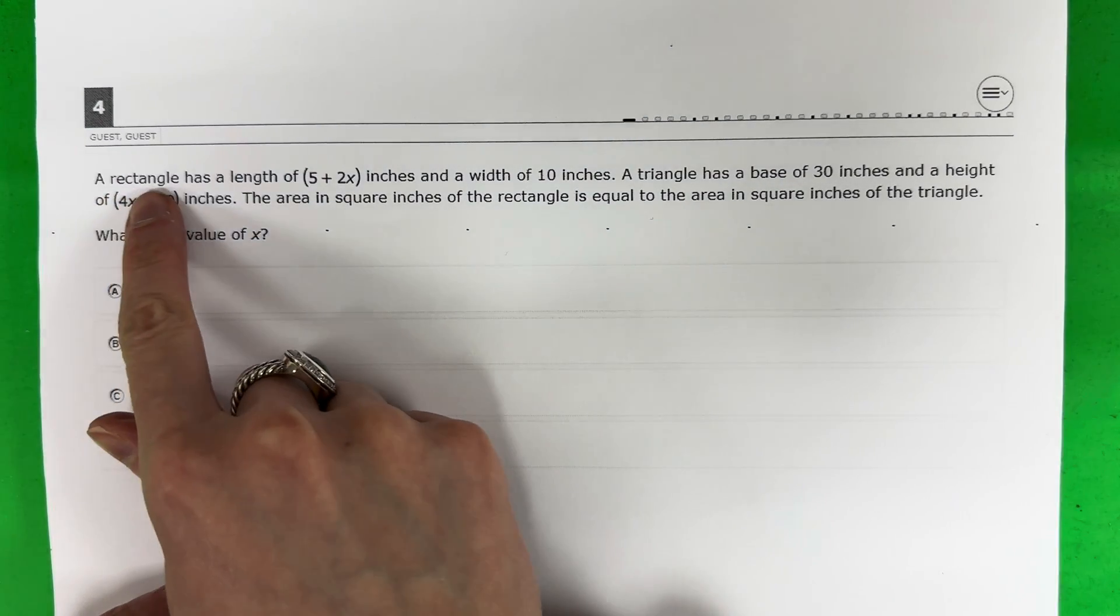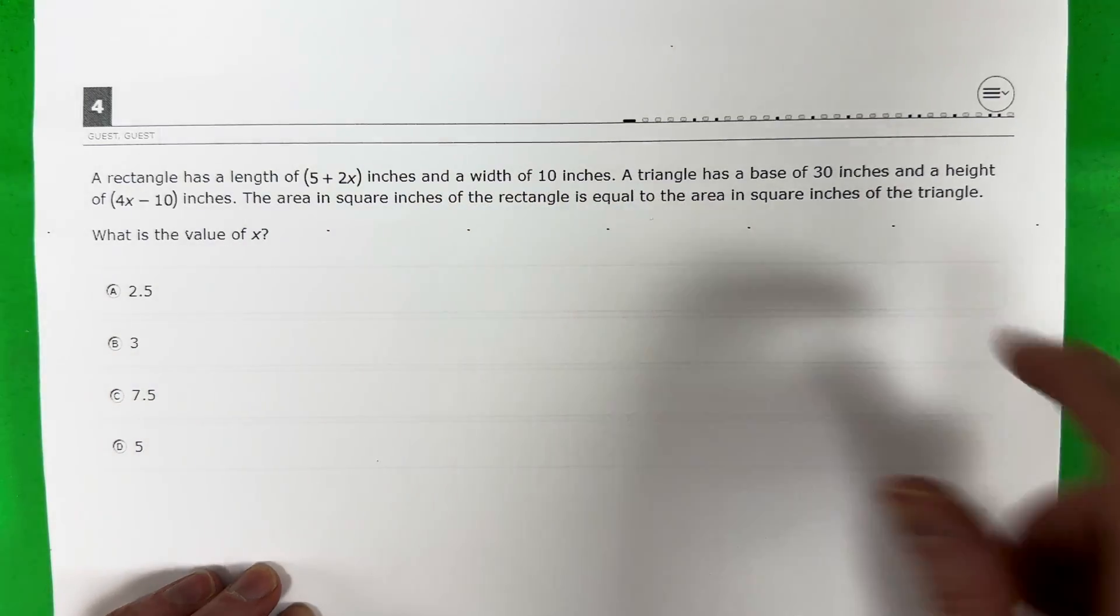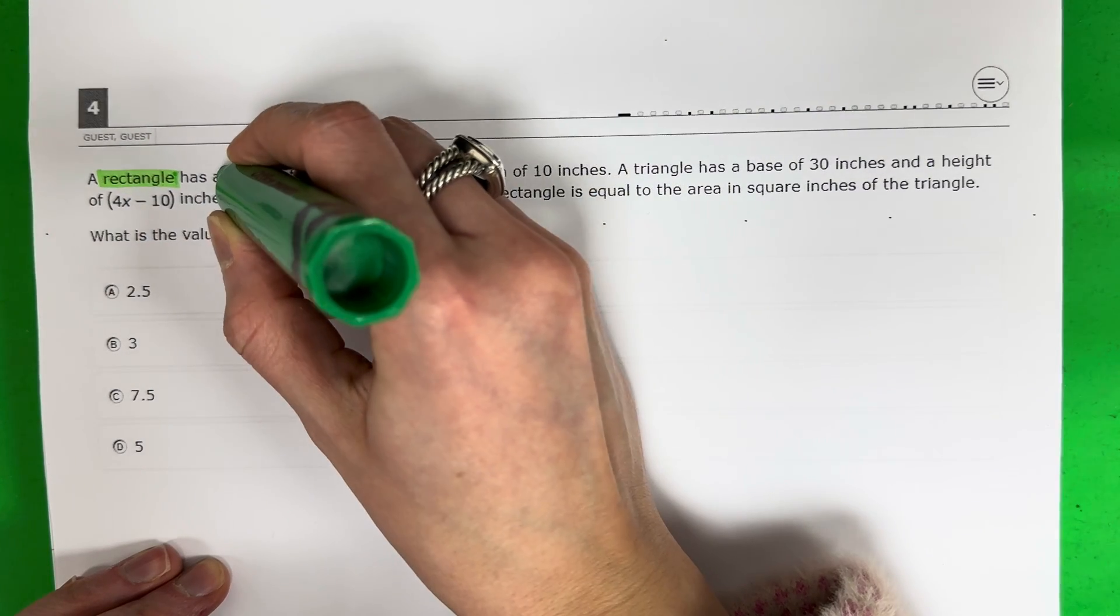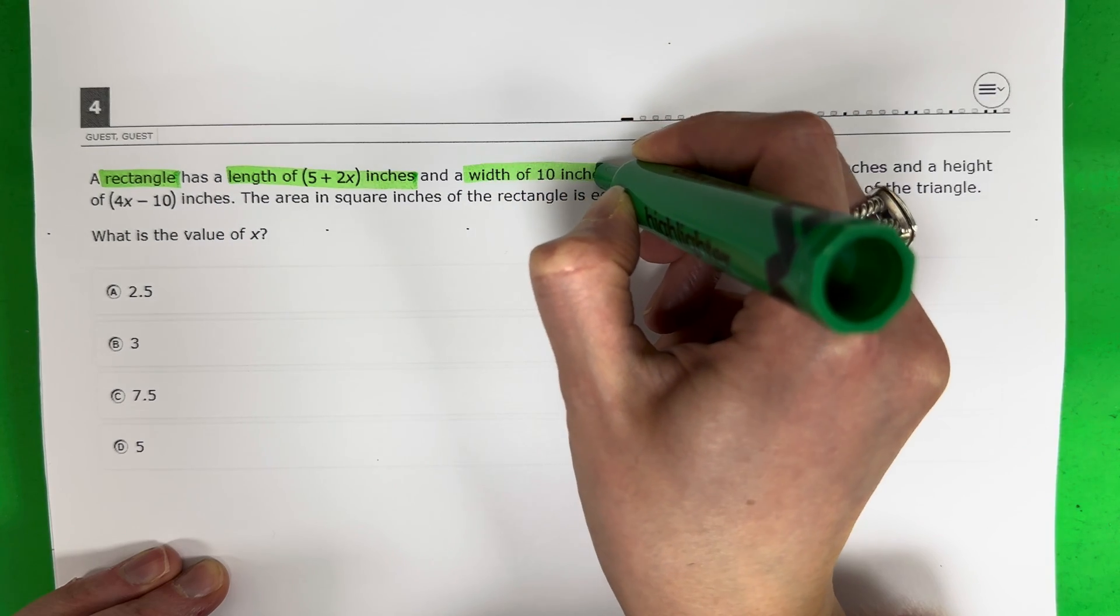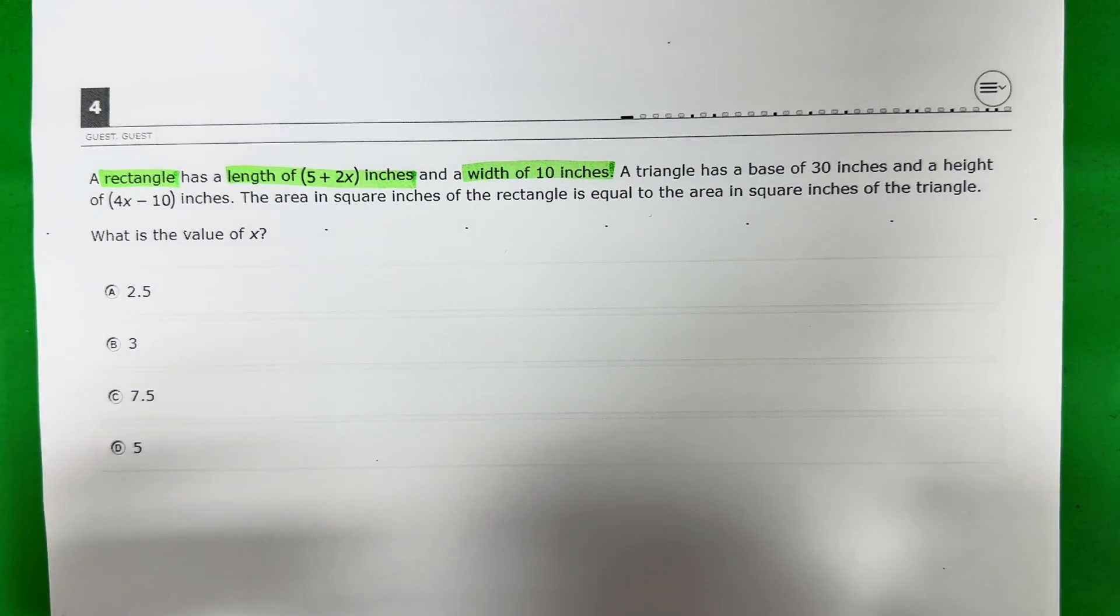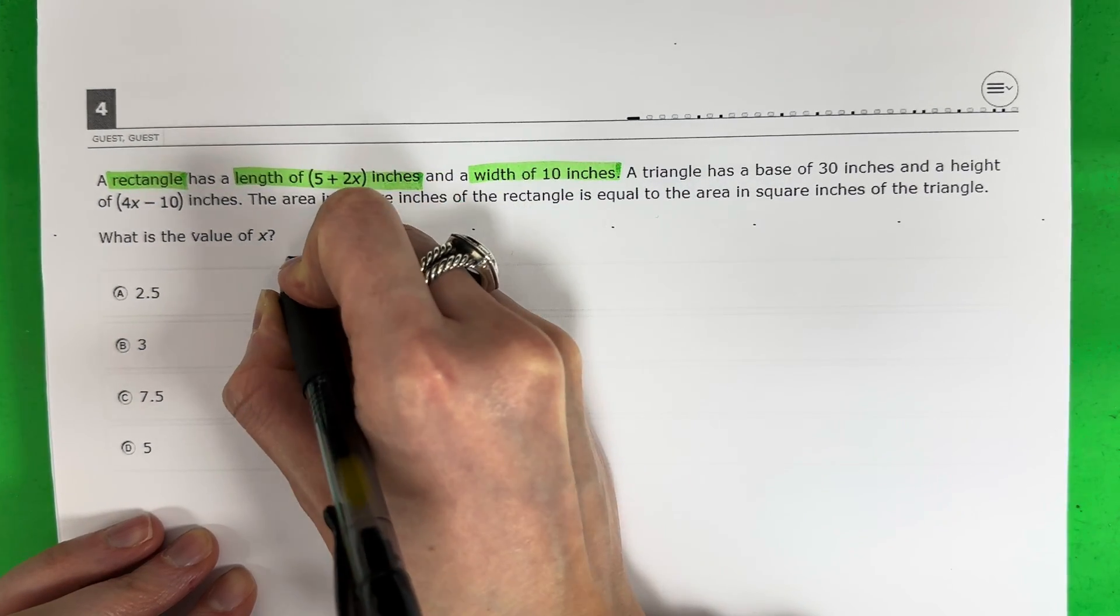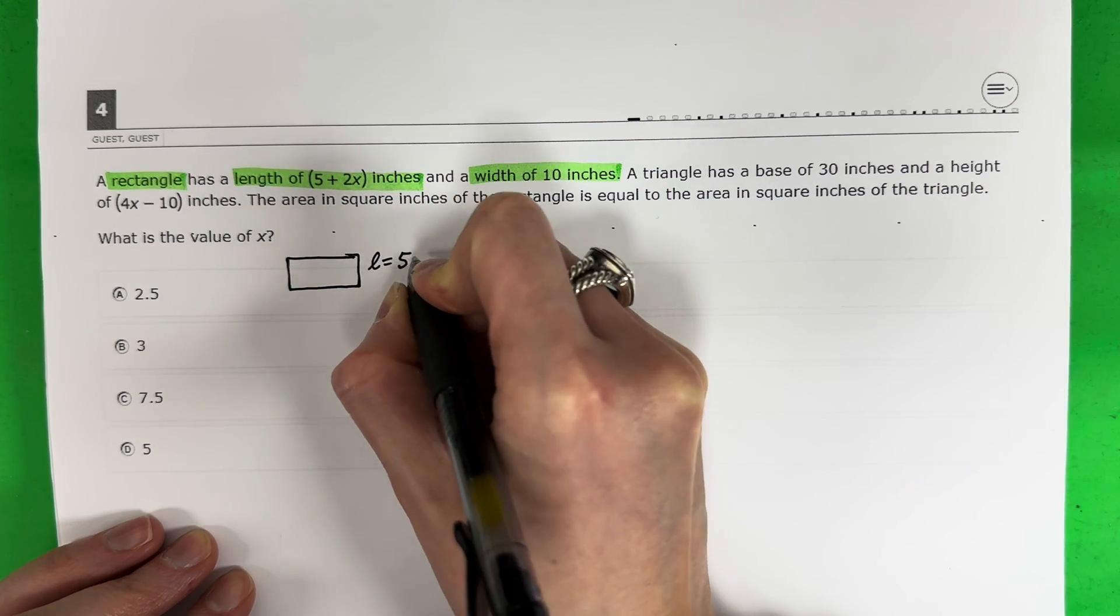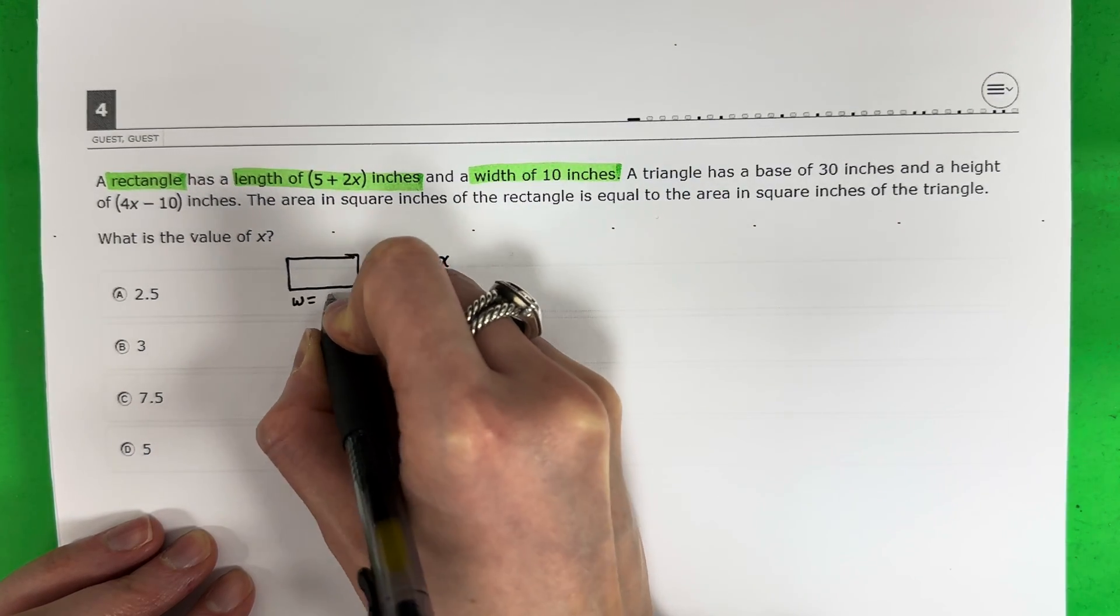Question 4. A rectangle has a length of 5 plus 2x inches and a width of 10 inches. So I have a shape, rectangle, and I have some measurements. The length is 5 plus 2x inches and the width is 10 inches. So what I like to do whenever they give me a shape is I like to draw it. So let's go ahead and draw our rectangle. They said the length is 5 plus 2x and the width, w, is 10 inches.